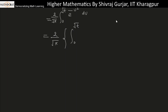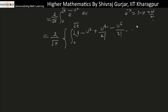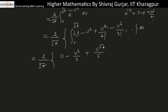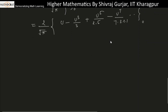Using the expansion e to the power minus x equals one minus x plus x squared over two factorial and so on, where x is u squared, we get one minus u squared plus u to the power four over two factorial minus u to the power six over three factorial and so on. Integrating with respect to u from zero to root t gives two by root pi times: u minus u cubed over three plus u to the fifth over five times two factorial minus u to the seventh over seven times three factorial, evaluated from zero to root t.